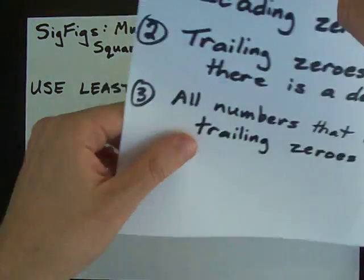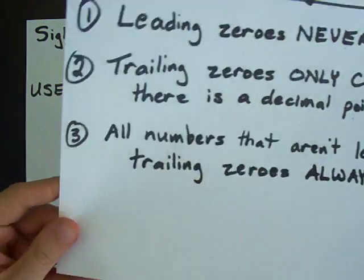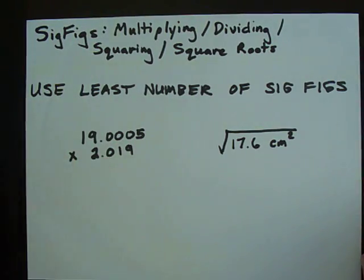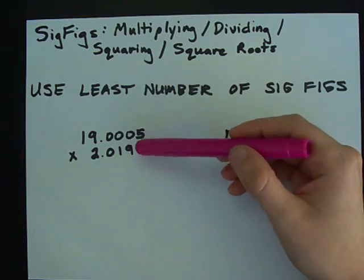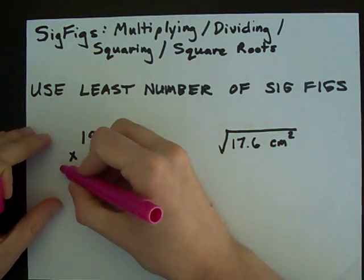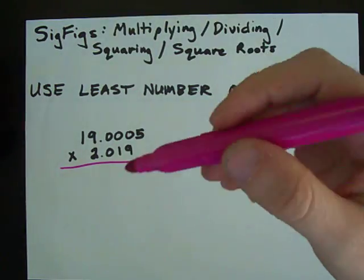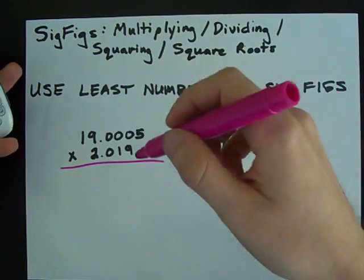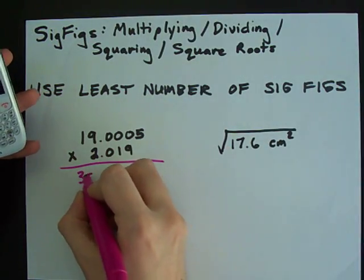Take a look at one of my other videos for my easiest rules ever for counting the number of significant digits. But the point is that when you are multiplying two numbers like this one, you type into your calculator 19.0005 times 2.019, you're gonna get some long ugly number like 38.